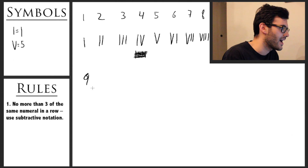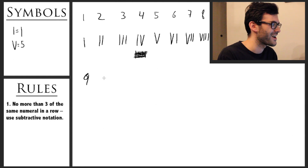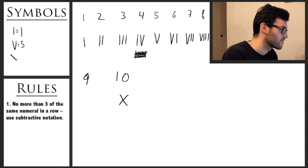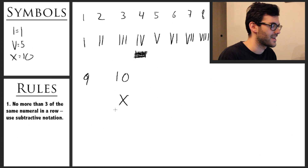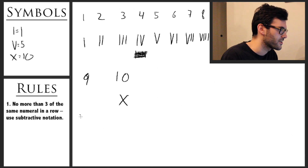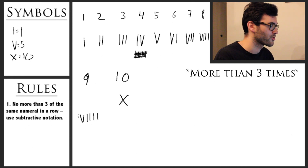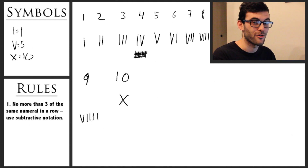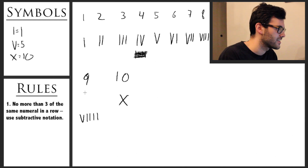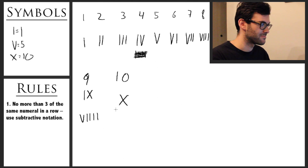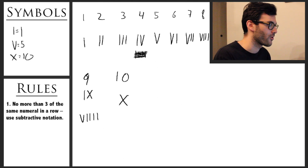We got to eight. If we look at nine, we're actually going to skip that until we learn the symbol for 10, and the symbol for 10 is an X. So X equals 10. For nine, instead of VIIII — which would be five and then four ones, using I four times — we're going to write IX instead: one before 10, literally a one before a 10.